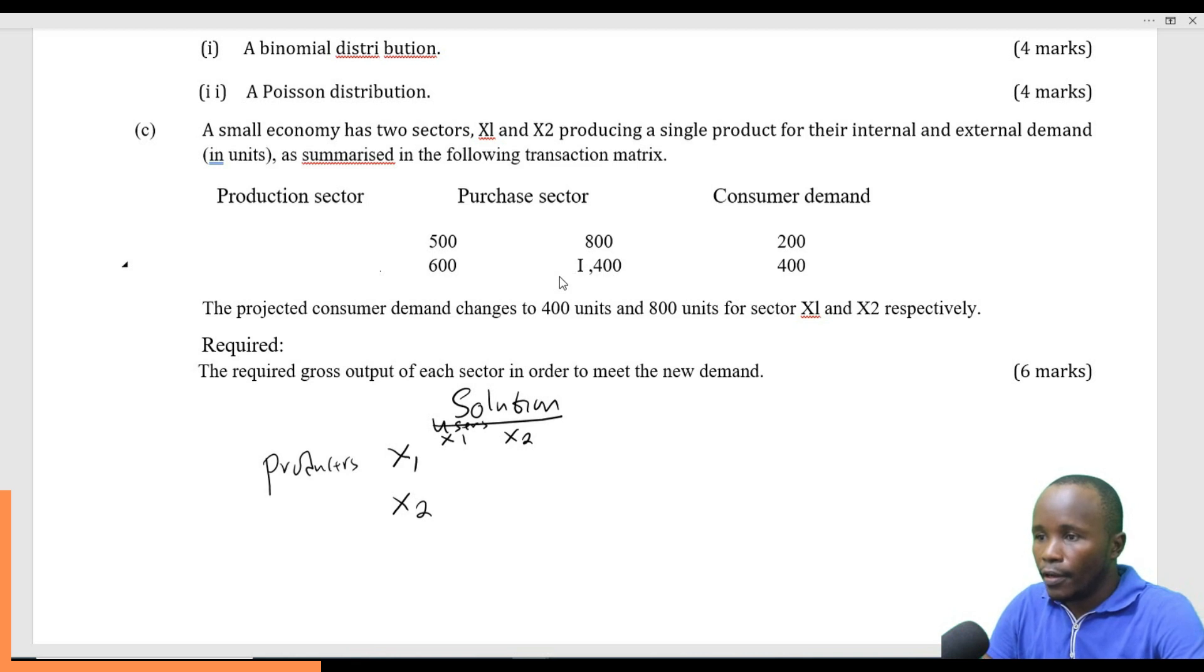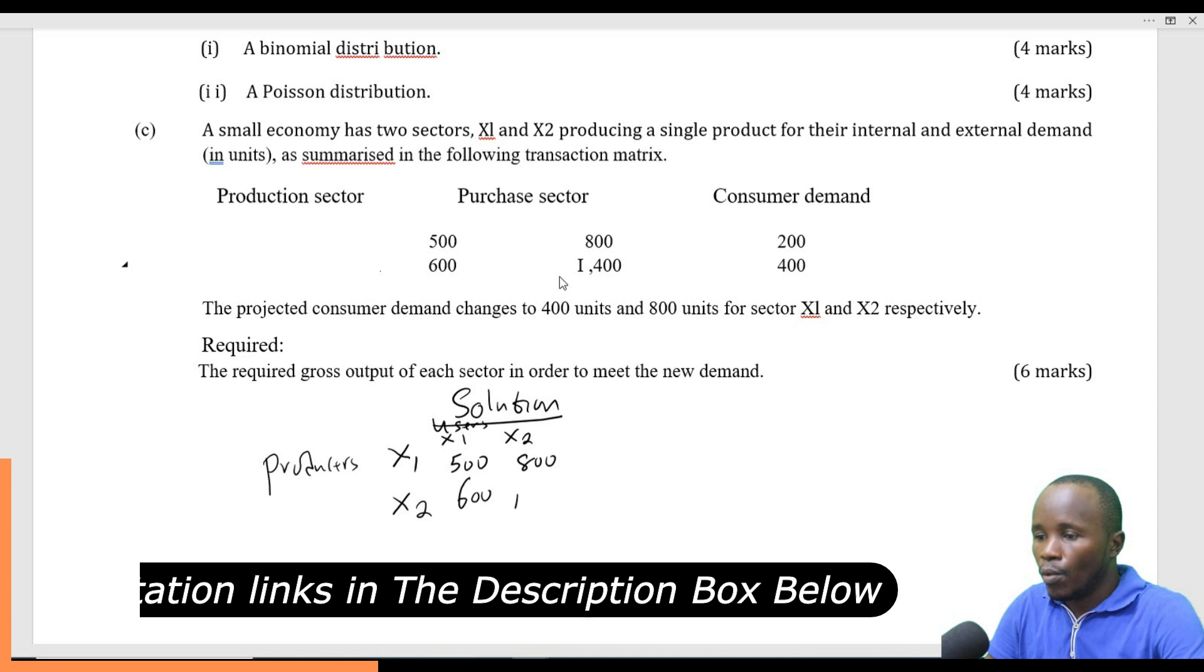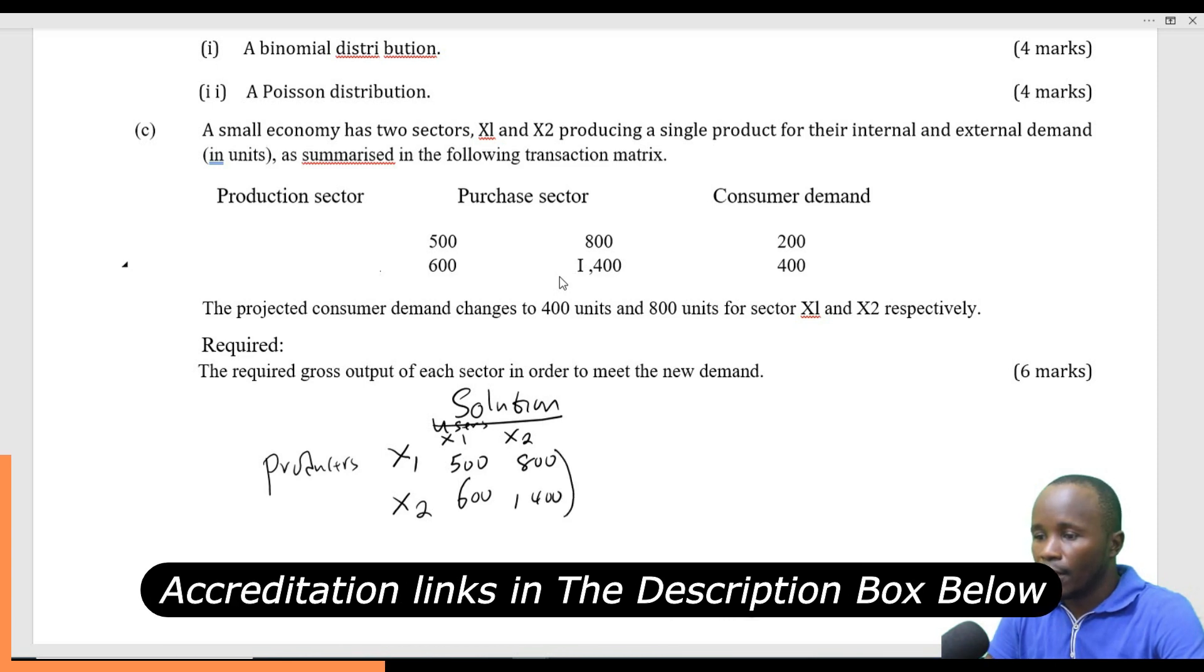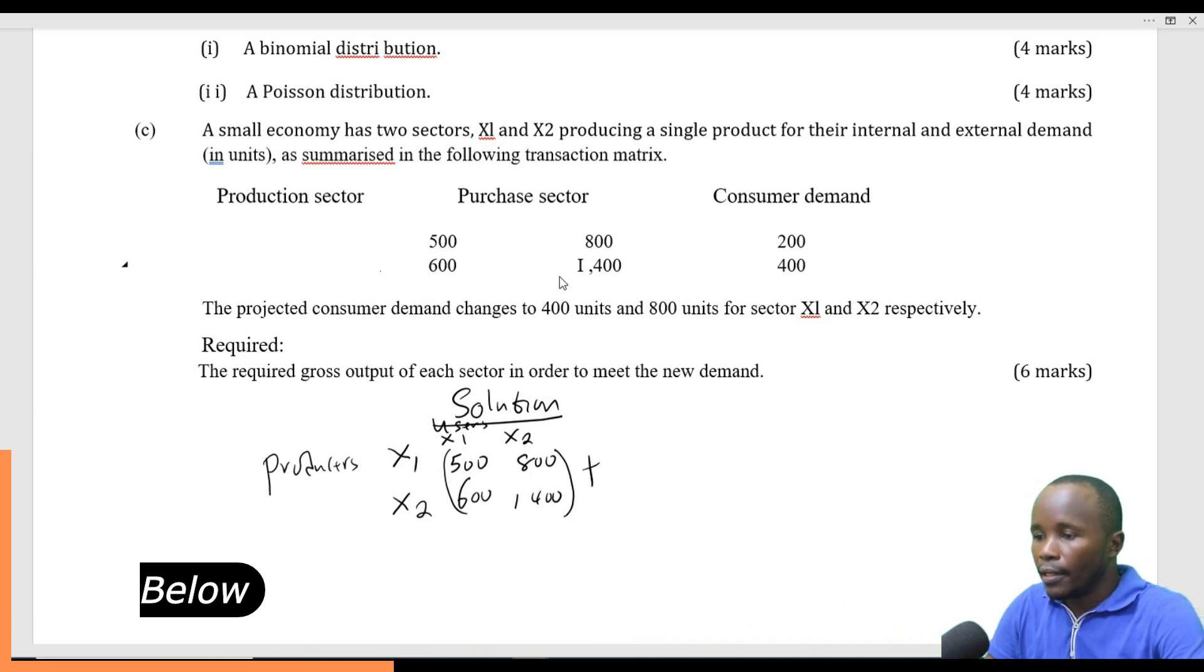X1 to X1 is 500, X1 to X2 is 600. Then X2 to X1 is 800, and X2 to X2 is 1,400. That is our first matrix. Then there is a final demand matrix of 200 and 400.